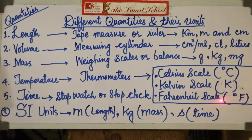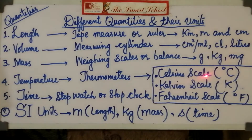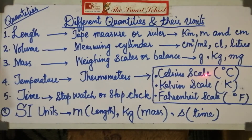On the Celsius scale, the numbers were chosen so that water boils at 100 degrees Celsius and freezes at 0 degrees Celsius.